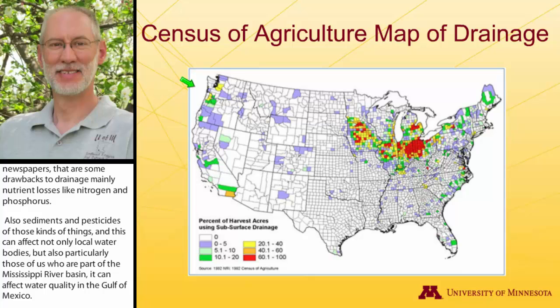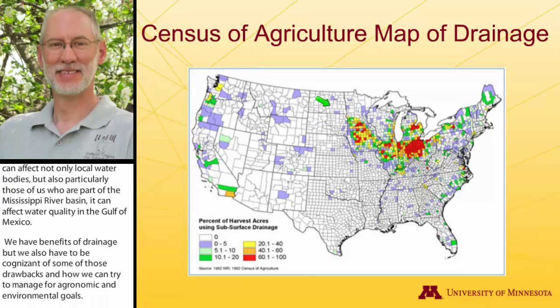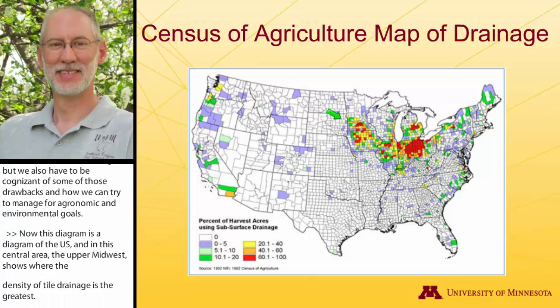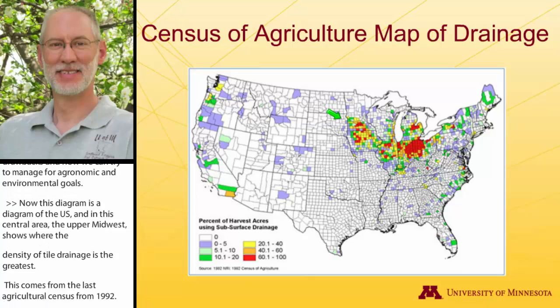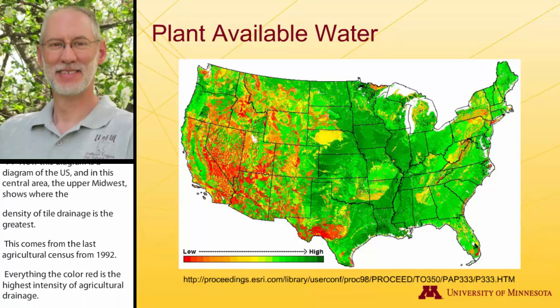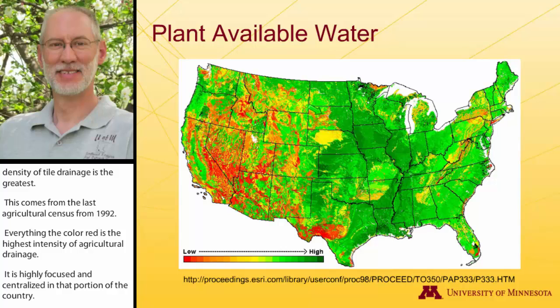This diagram shows a map of the United States, and in the central upper Midwest area it shows where the density of tile drainage is the greatest. This comes from the last agricultural census from 1992, so everything in red is the highest intensity of agricultural drainage — highly focused and centralized in that portion of the country. It's no coincidence that when we look at the same map for plant-available water, the plant-available water is also highest in that same region of the country.